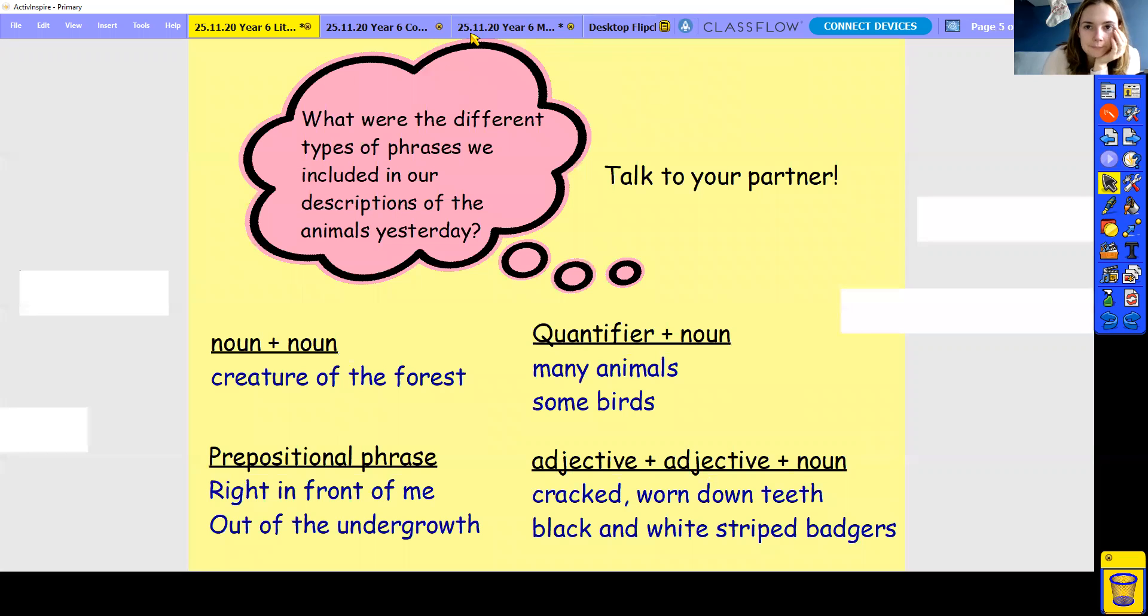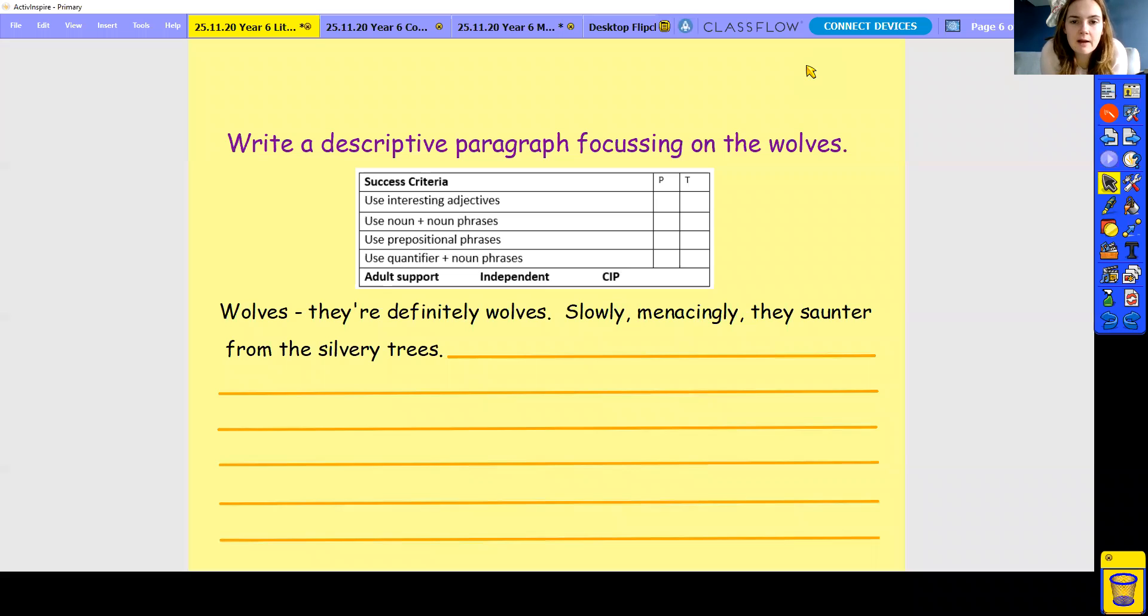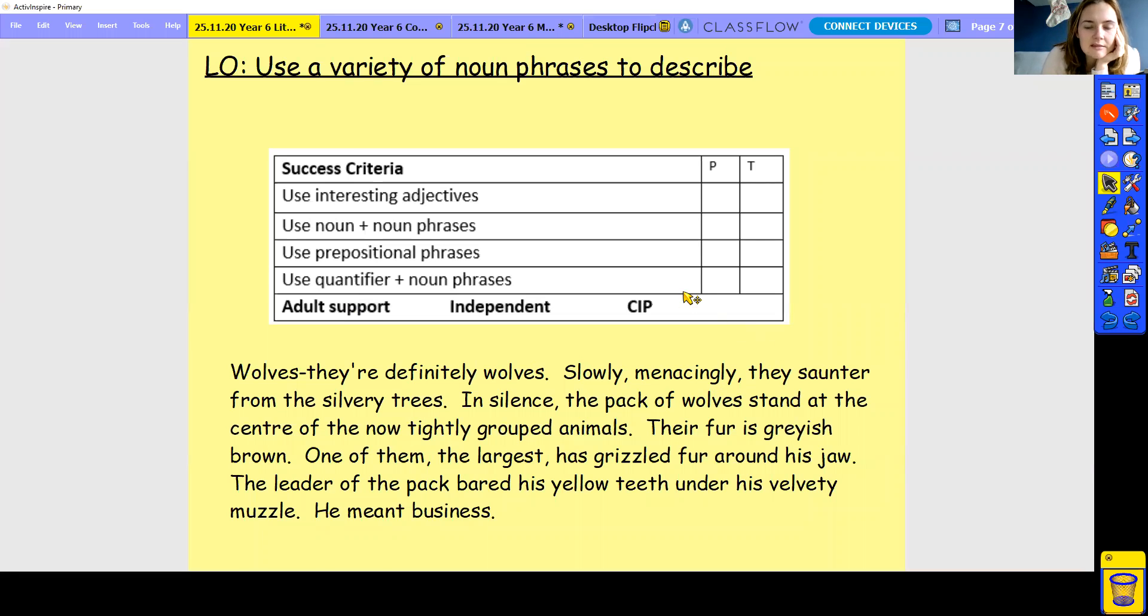Okay. So today you're going to have a go at writing a descriptive paragraph focusing on the wolves today. So I'd like you to start with this. Wolves, they're definitely wolves. Slowly, menacingly, they saunter from the silver trees. So we're really focusing on those descriptions just like yesterday. You actually did really well yesterday. I got some really good pieces of work from you all. So let's just keep that going. And you need to use quantifiers and noun phrases, prepositional phrases, noun and noun, and interesting adjectives. Same as before. So this is my version then. So we've got wolves, they're definitely wolves. Slowly, menacingly, they saunter from the silver trees. In silence, the pack of wolves stand at the centre of the now tightly grouped animals. Their fur is greyish brown. One of them, the largest, has grizzled fur around his jaw. The leader of the pack bared his yellow teeth under his velvety muzzle. He meant business. So we're describing everything that's going on there. And we're going to see if we can get all of these in. So that is your work for today.